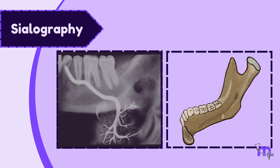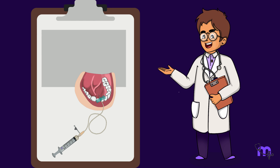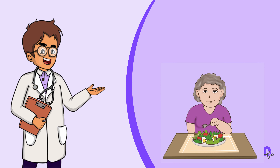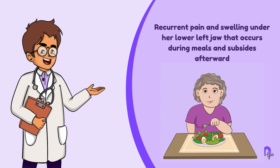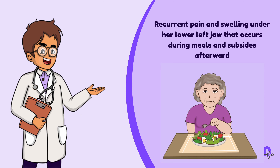So what is sialography? It is a specialized procedure that works by injecting a small amount of contrast dye into a single salivary duct. This dye shows up on radiographs, creating a detailed picture of the gland's structures using 2D or 3D imaging techniques.